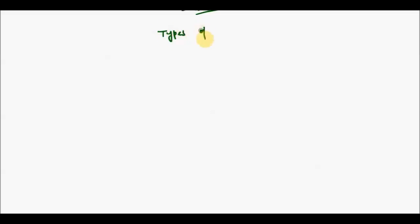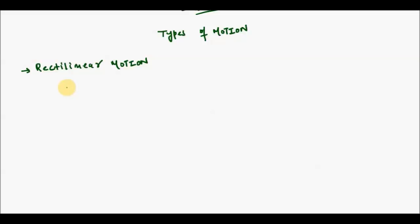Now let's talk about the types of motion. The first type is rectilinear motion. If an object is moving in a straight line, we say that it is having rectilinear motion. For an object to be in rectilinear motion, it only has to travel in a straight line.